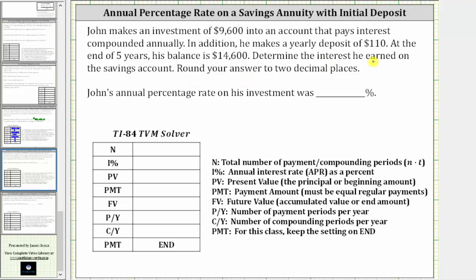We will answer this question using the TVM solver on the TI-84. Let's begin by determining the required information. Capital N is the total number of payment periods or compounding periods. Because the interest is compounded annually and he also makes annual deposits, N is the number of years — five. So capital N is five.